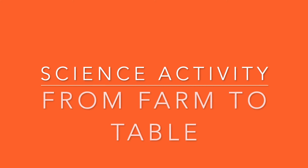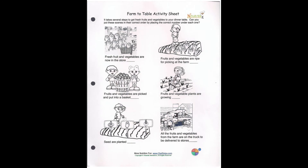Hey grade 1, welcome to our farm-to-table activity sheet for science. If you printed it off, this is what the sheet looks like. If you do not have this printed, just draw six boxes on a blank piece of paper and you are good to go.